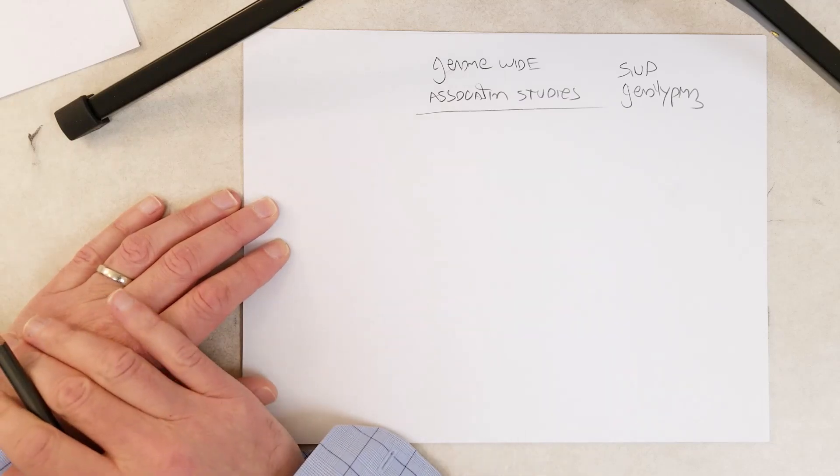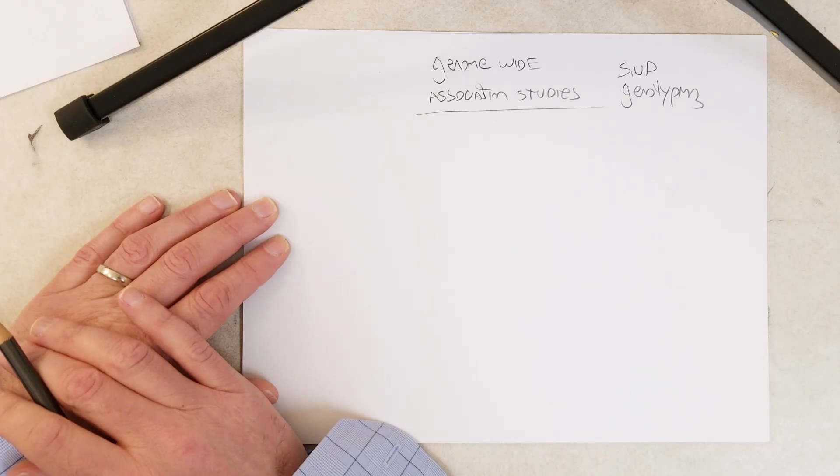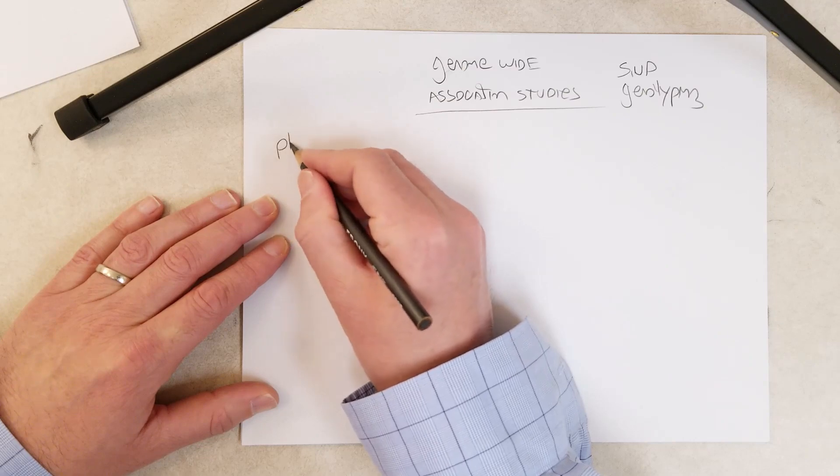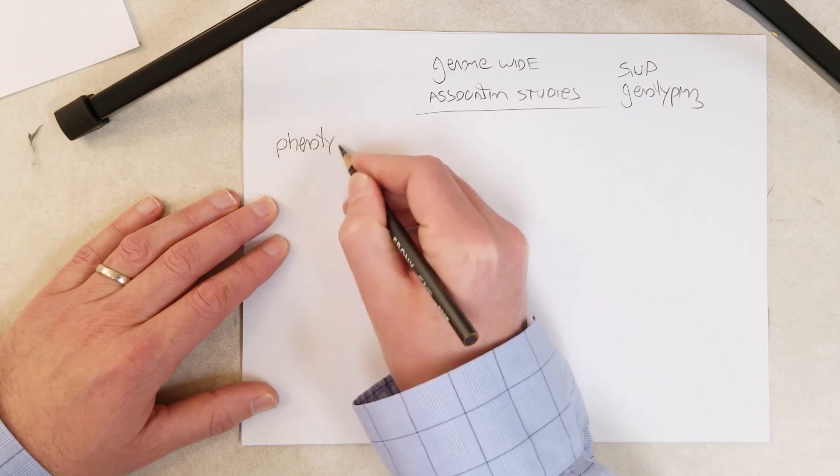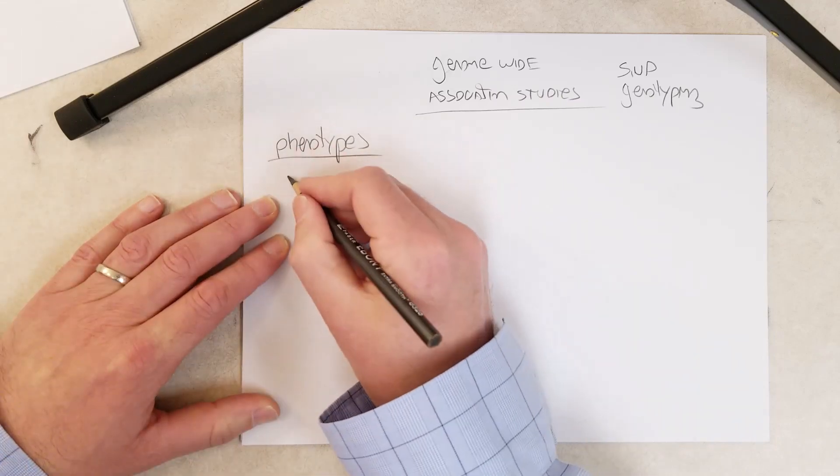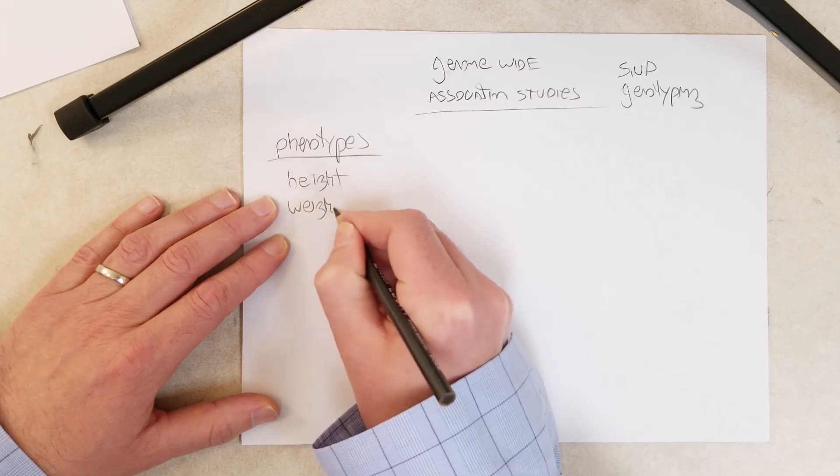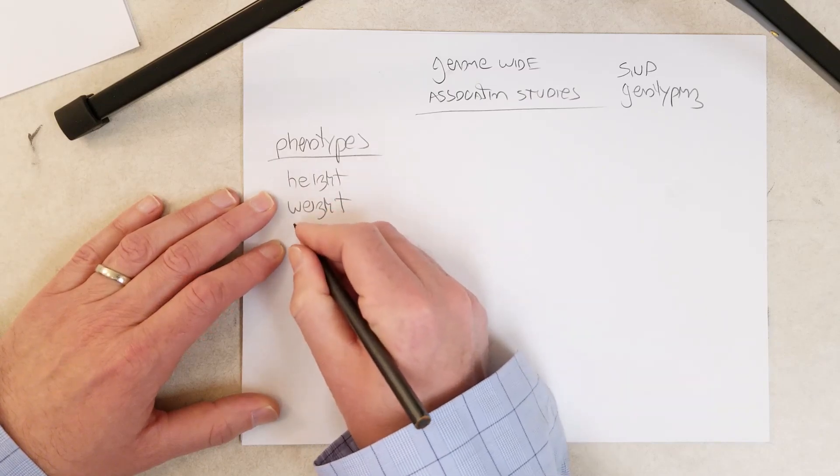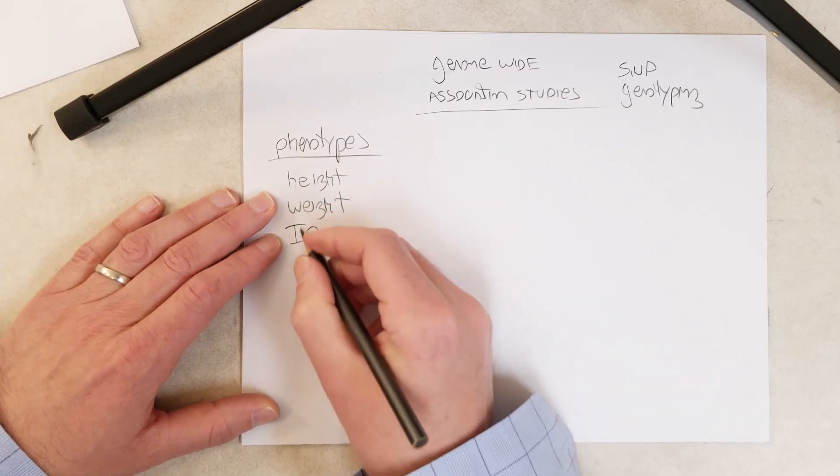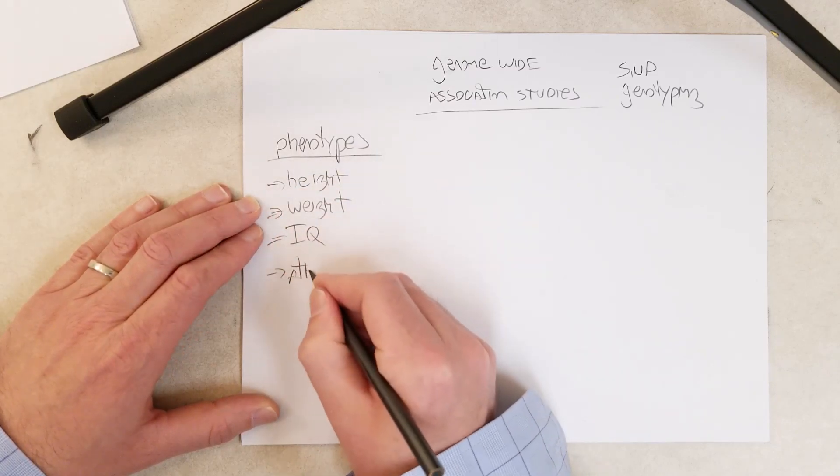Most phenotypes in humans are extremely complex, controlled by many genes - things like height and weight and IQ and athletic ability.